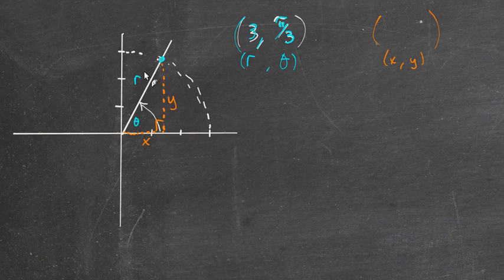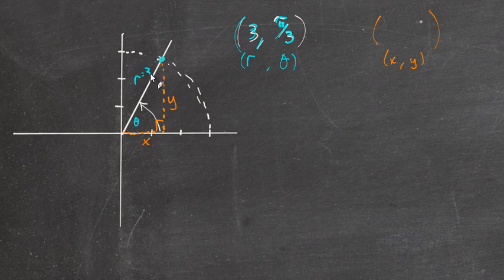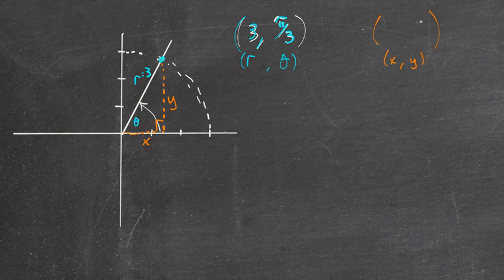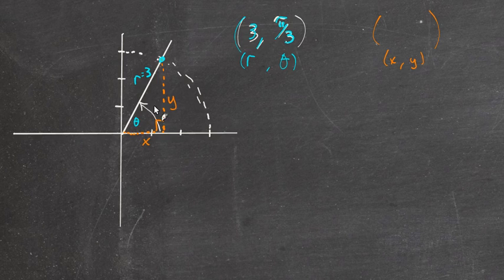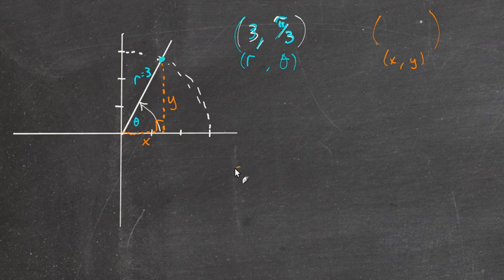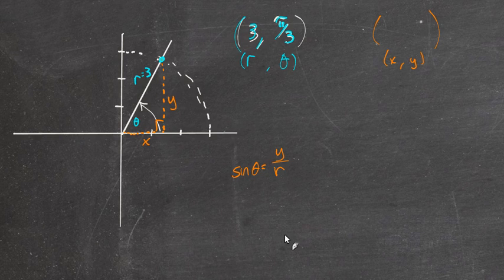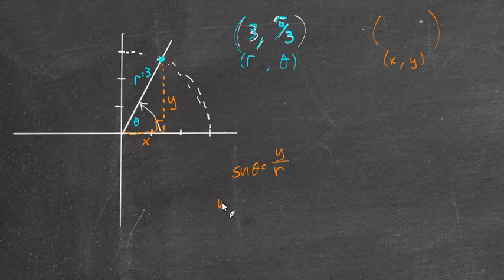And this is r. And r, in this case, equals 3. But if we just generalize it, θ, r, x, and y, we could say that, let's look at this angle. Let's look at the side opposite, which is y, and the hypotenuse, which we're calling r. We could say that the sine of θ is equal to opposite over hypotenuse. And then, we would like an expression for y. So y, if we multiply both sides by r, y is r sin θ.